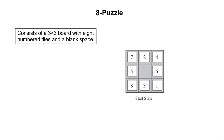The eight puzzle problem consists of a three by three board with eight numbered tiles and a blank space. The diagram here shows one possible configuration for the eight puzzle problem. It shows that we have a three by three board with tiles from one through eight and a blank space at the center.